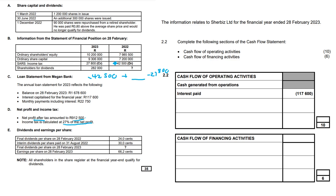Since 912,500 is the after-tax figure, we divide it by 0.73 to get the 100% (before-tax) amount, which gives us 1,250,000 net profit before tax. We then multiply 1,250,000 by 27% to get 337,500. So the full calculation is: minus 42,500 plus 337,500 minus 27,800, which equals 267,200.